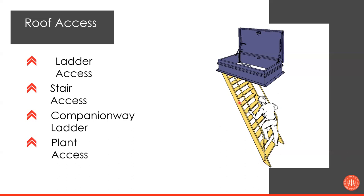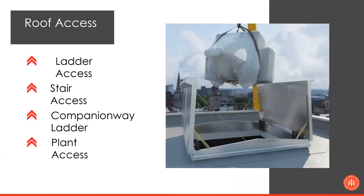For ladder height recommendations: up to three metres, a companionway ladder is fine. Above three metres, you need to introduce a rest platform — a three-metre climb, then a rest platform, then up to the desired height. That's very important to get right.